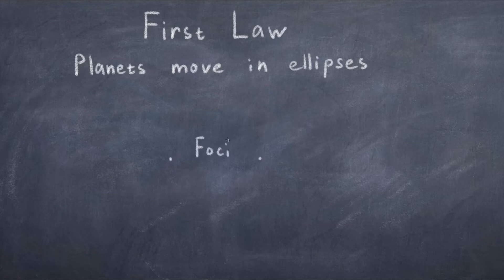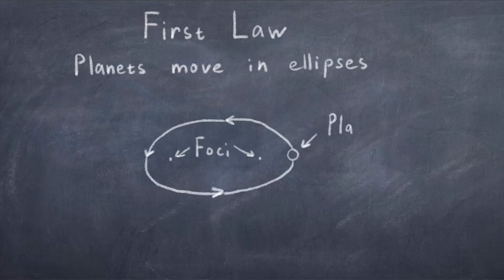But note that a circle is just a special case of an ellipse. So what his law states is that the orbit of a planet is an ellipse. Ellipses have two focus points, or foci, and these points help to define the ellipse. Now the law simply states that at one of these points the sun must be, and at the other point there is nothing in space, it's just a geometric point.